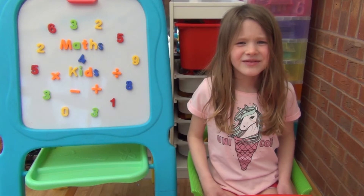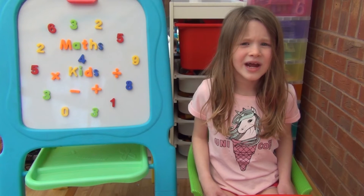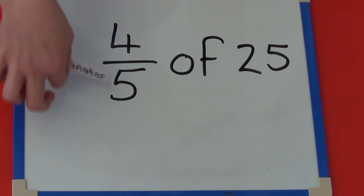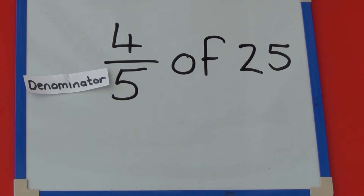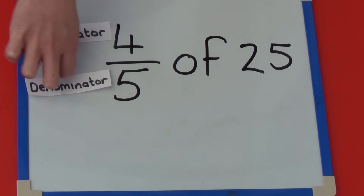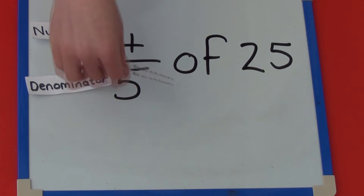This time we're going to try a trickier one. We're going to look at what happens when the numerator is more than one. We're going to work out four-fifths of twenty-five. The denominator is five, so this tells us we are sharing between five teddies. The numerator is four, so this tells us we need to know how many sweets four of the five teddies have all together. Four also tells us it's a non-unit fraction.